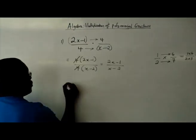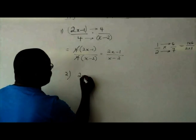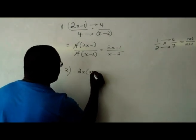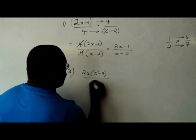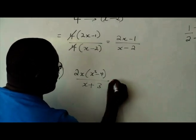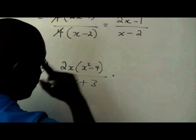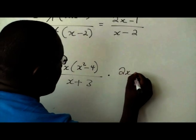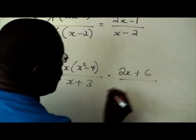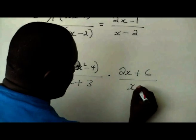Right. This was 1, 2, 2x, x squared minus 4 over x plus 3 multiplied by 2x plus 6 over x plus 2.